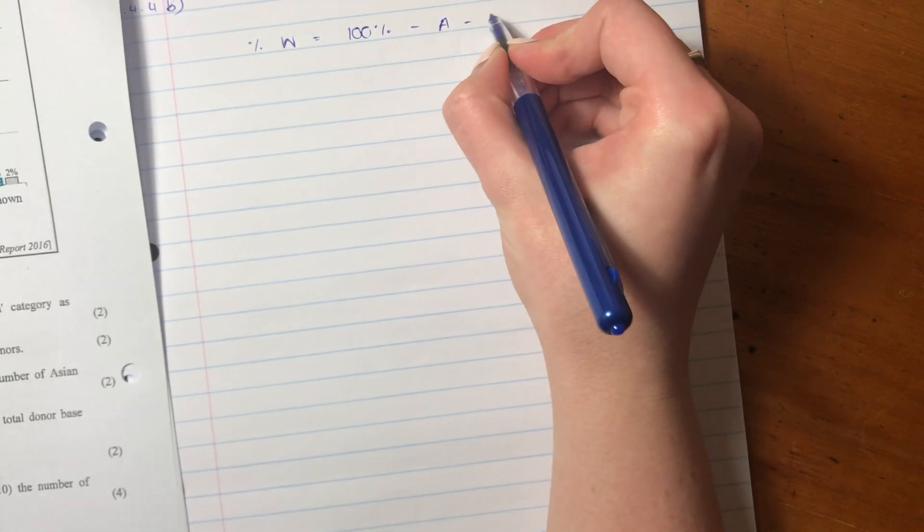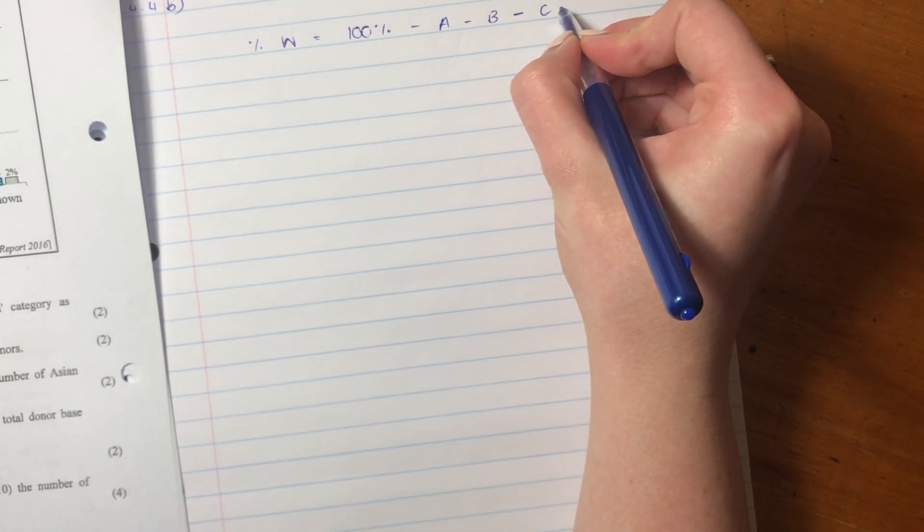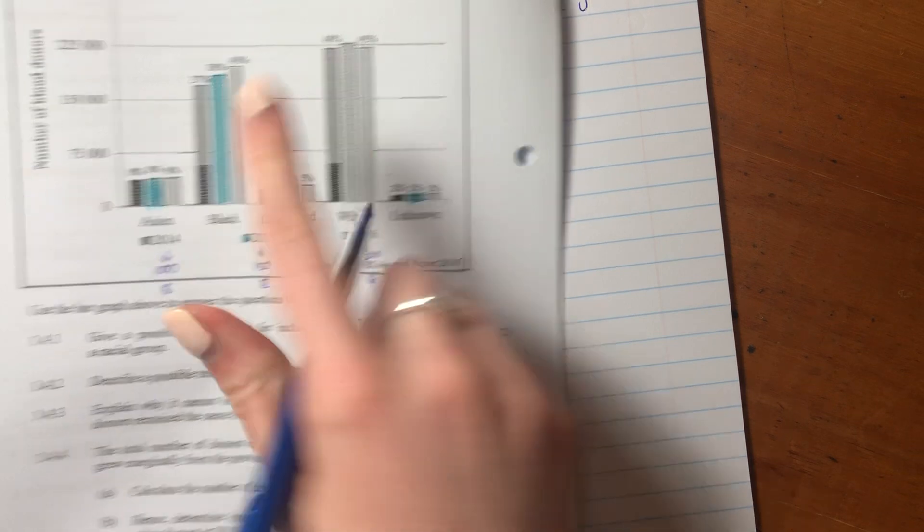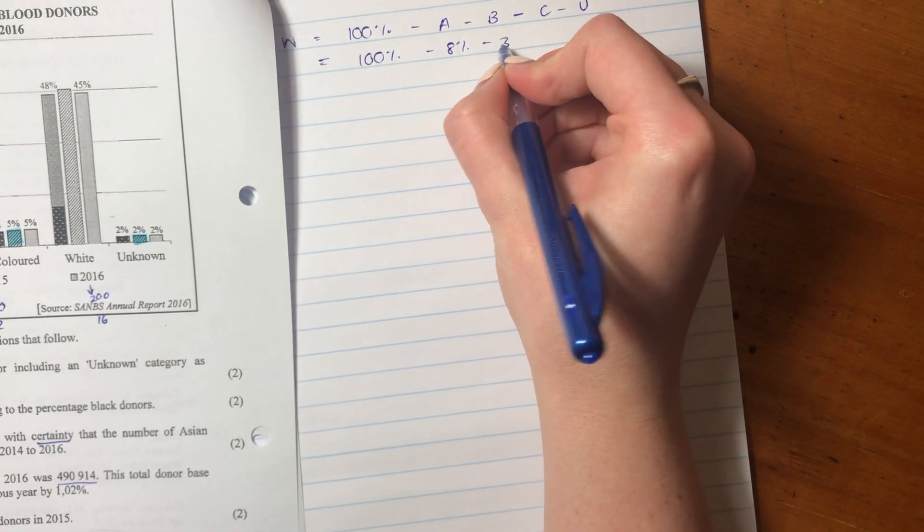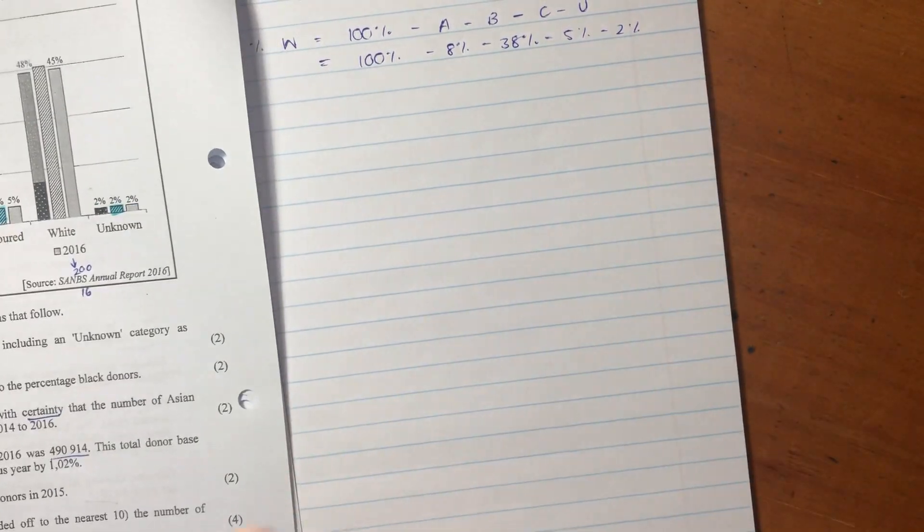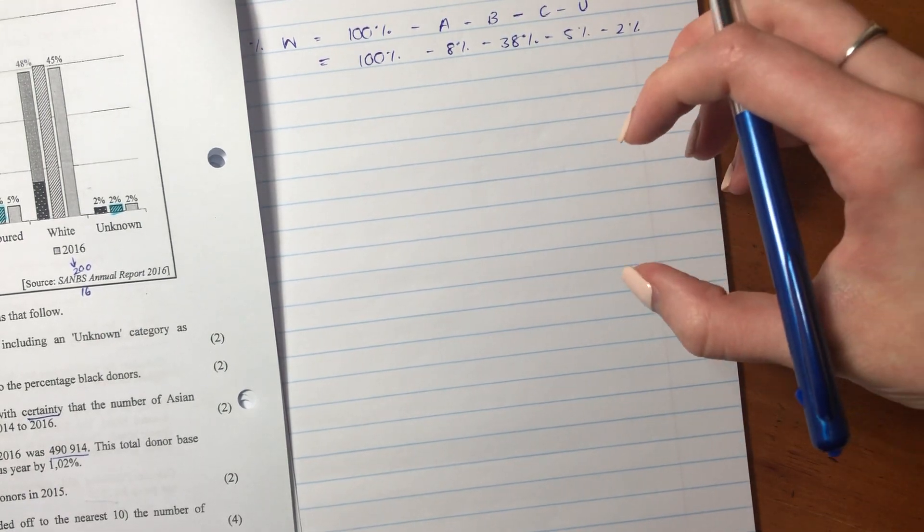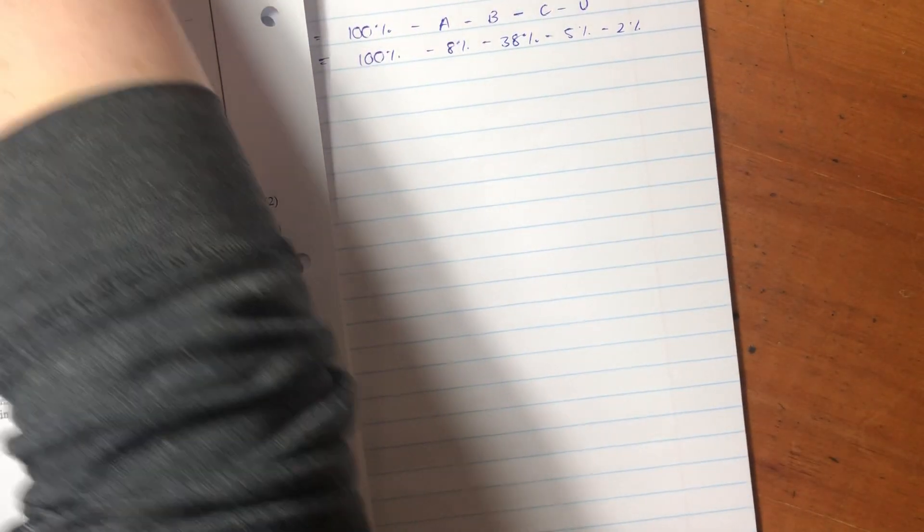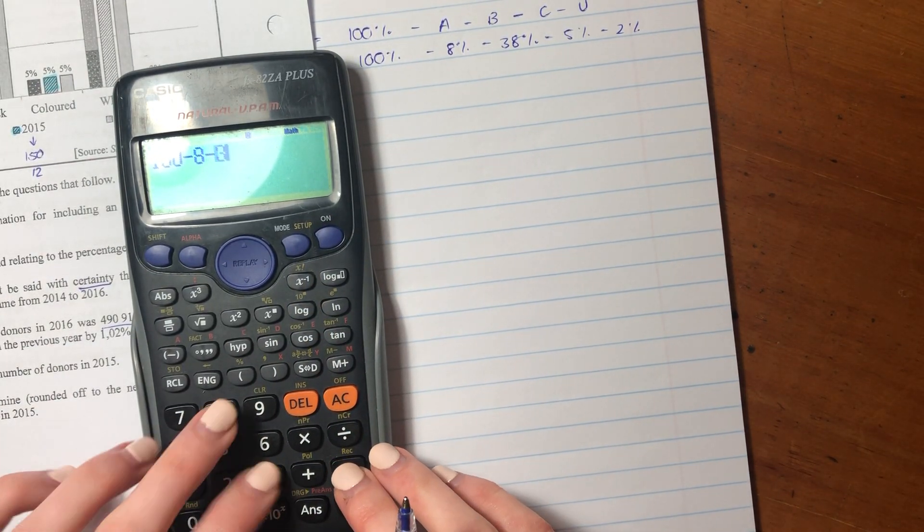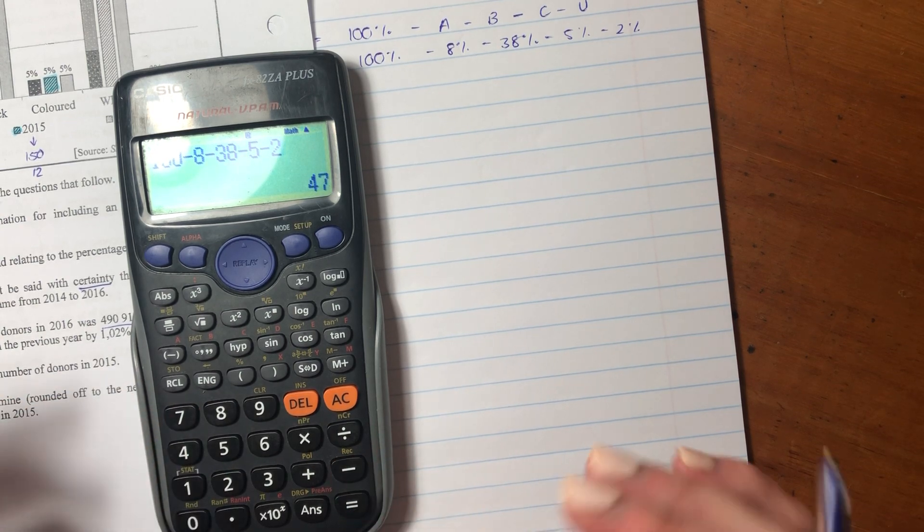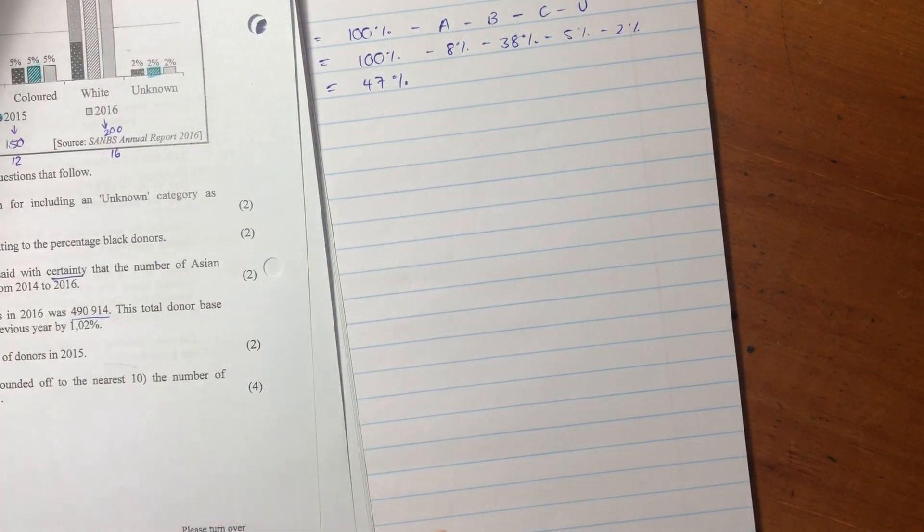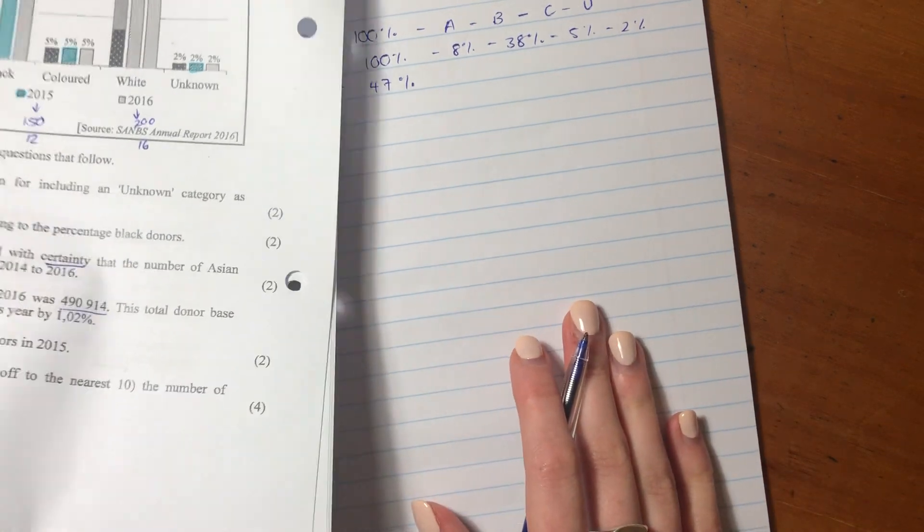So we're going to say the percentage white people is going to be 100% minus Asians minus black people minus colored people minus unknown. So it's going to be 100% minus 8 minus 38 minus 5 minus 2. If you take all of the other people out of the 100%, you're just left with white people. So let's put that into our calculator. You don't have to put all the percentage signs in. You can literally drop all of them if you want to. It's just going to be 47%.